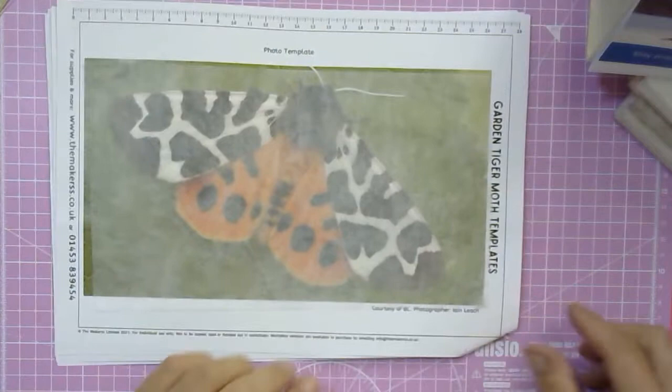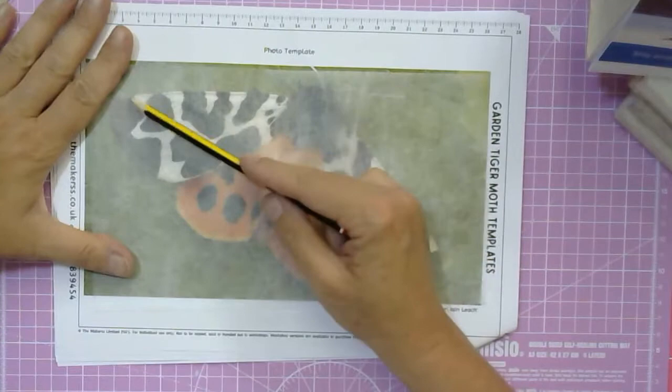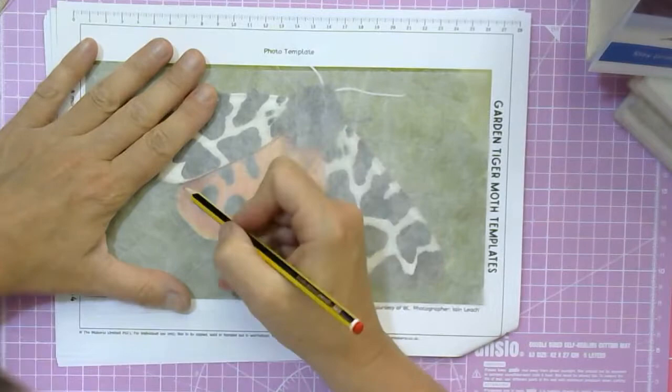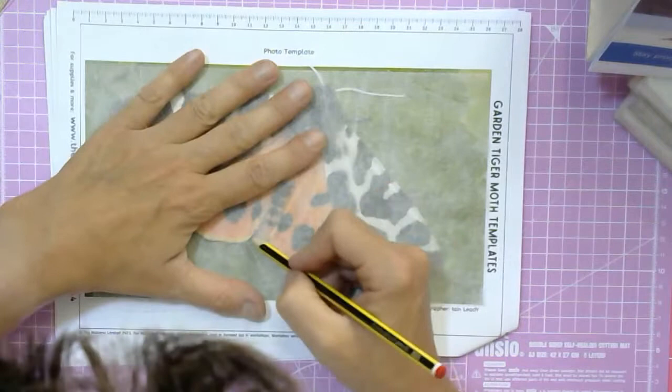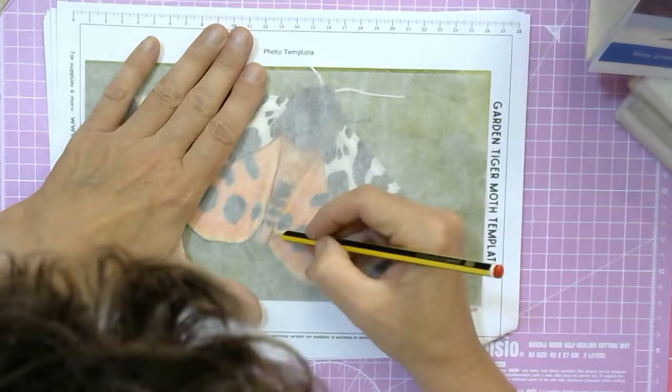Now we're not wanting you to add all the details because the wings will be completely covered in the background wool first. I want you to draw around the actual wings and mark where the body is from what you can see through the paper.